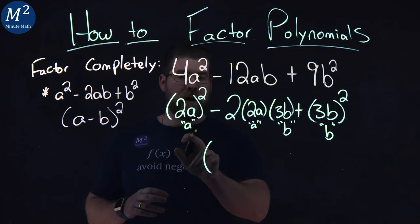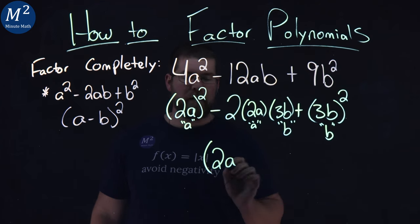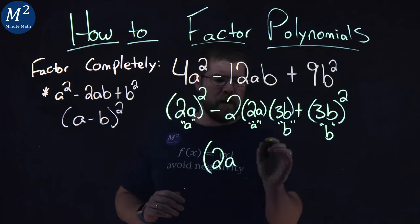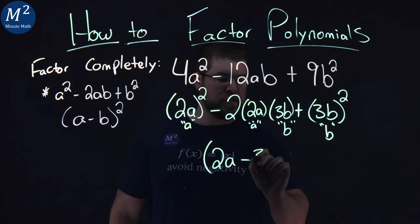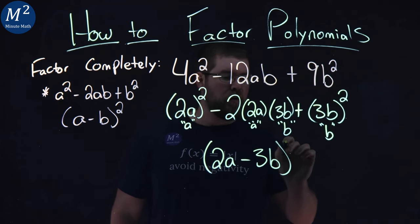So to do that, my a value, which is 2a—again, I know it's a little difficult to process, take your time. Minus my b value, which is 3b, all squared.